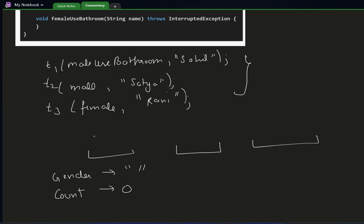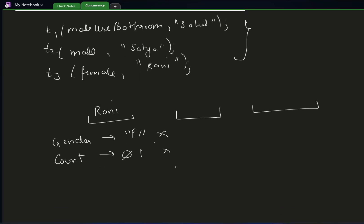Suppose Rani went in — the thread for Rani went in. Now we have to make sure that Sahil and Satya, the two threads that are there, don't enter. We ensure this by checking the two conditions. When Rani has entered, count becomes one and gender becomes female. When threads T2 and T1 try to enter, they will see their gender doesn't match, so they are blocked.